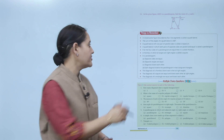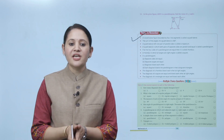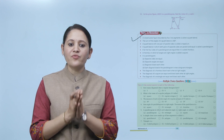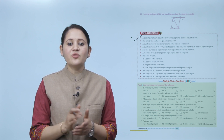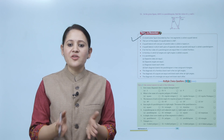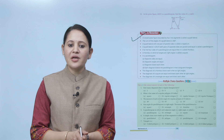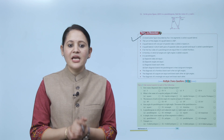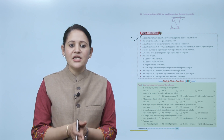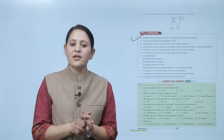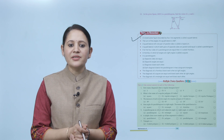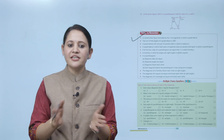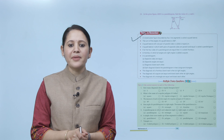Things to remember: a closed plane figure bounded by four line segments is called a quadrilateral. The sum of angles of a quadrilateral is 360 degrees. A quadrilateral with one pair of parallel sides is called a trapezium. A quadrilateral where both pairs of opposite sides are parallel and equal is a parallelogram. If all four sides of a parallelogram are equal, it is a rhombus. A rhombus with all right angles is a square. In a parallelogram, opposite sides are equal, opposite angles are equal, and diagonals bisect each other. Each diagonal bisects the parallelogram into two congruent triangles. The diagonals of a rhombus bisect each other at right angles. The diagonals of a square are equal and bisect each other at right angles. The diagonals of a rectangle are equal and bisect each other.